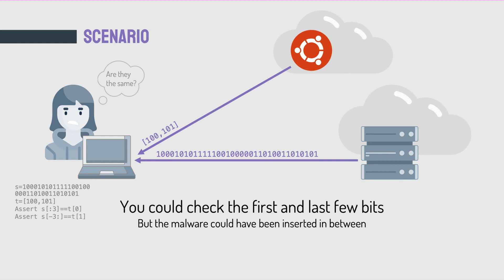It kind of defeats the purpose of having a cloud infrastructure to make the internet faster. So to make things more efficient, you could just check part of the file instead of the whole thing. You could ask the developer to send you the first few bits and the last few bits of this large file, and then compare them to what you downloaded from the cloud server. But obviously, if you're worried about malware, this is not a good solution — the malware creators could just leave the first few and last few bits intact and change the middle instead.